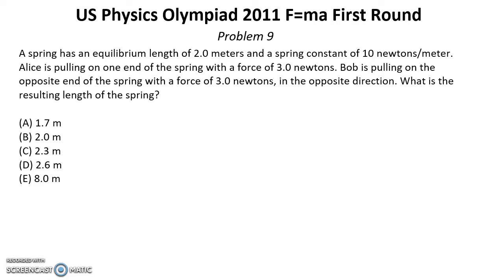Problem number nine. Solution for this problem you can find by reference under this video in the description. A spring has an equilibrium length of 2 meters and a spring constant of 10 N per meter. Alice is pulling on one end of the spring with a force of 3 N. Bob is pulling on the opposite end of the spring with a force of 3 N in the opposite direction. What is the resulting length of the spring?